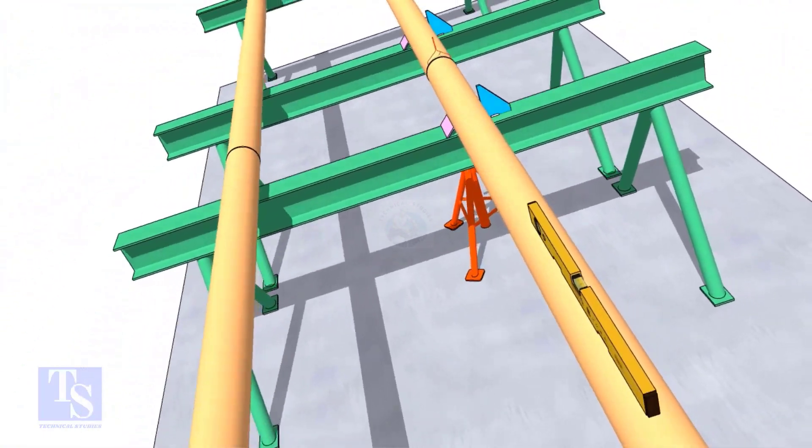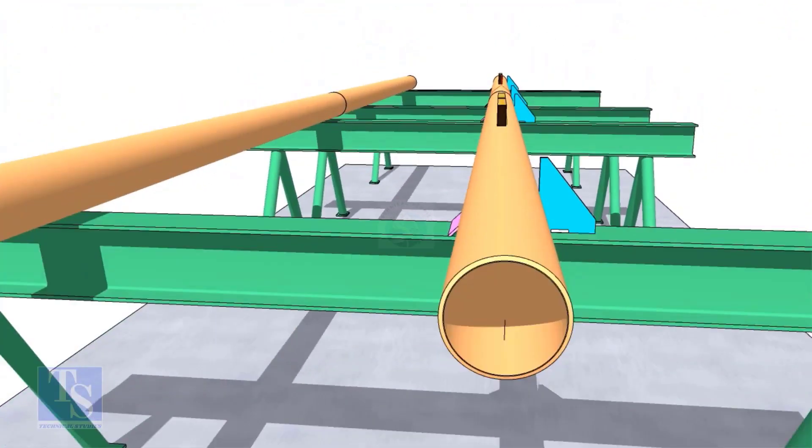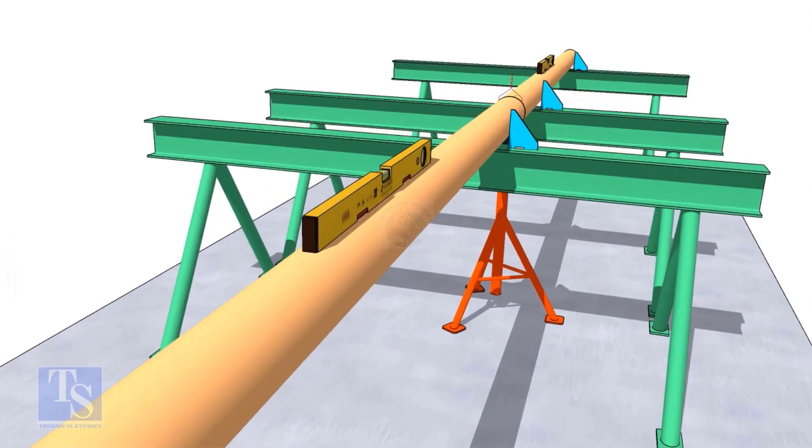Check the straightness of the pipes by looking from one end of the pipes. This is the best way to check the straightness.